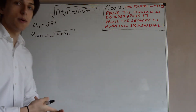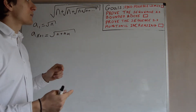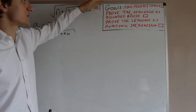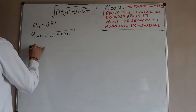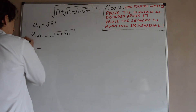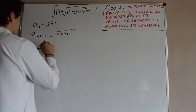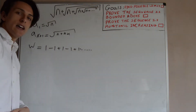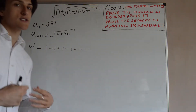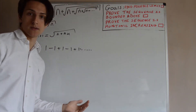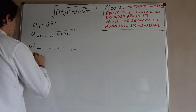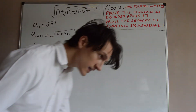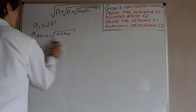Our goals: we want to find the possible limit, then prove the sequence is bounded above and monotonically increasing. Why do we actually need to prove the limit exists — why can't we just assume it? Well, for example, if we have the sequence 1, −1, +1, −1, +1, … which I'll call w for wrong, and we assume it has some finite limit and work with it like normal numbers, we get w equals 0, or a half, or 1, or −1, or whatever. So we genuinely need to prove that this limit exists.